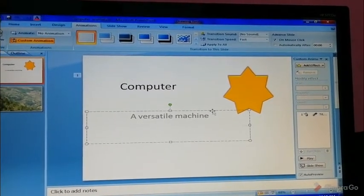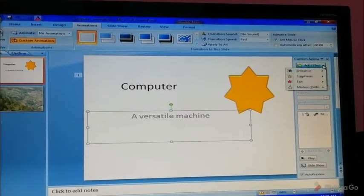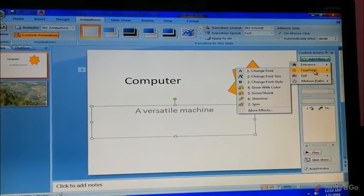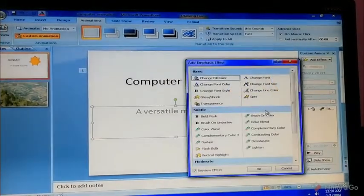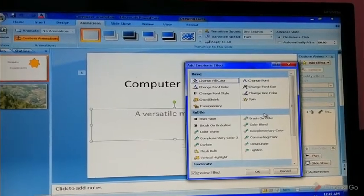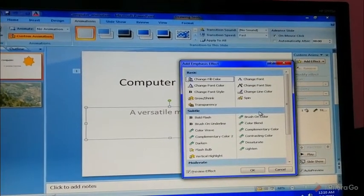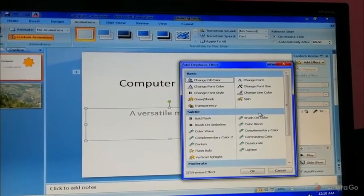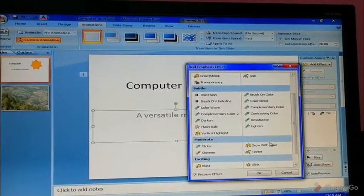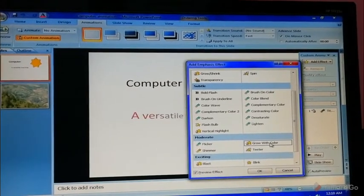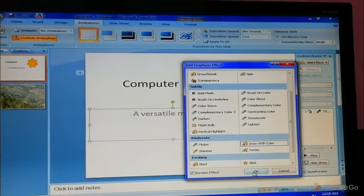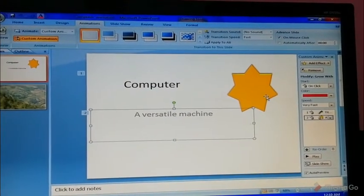Select the next object and click on the Add Effect button. Now see the Emphasis category. Here are so many effects you can select, like this one, Grow with Color, to emphasize an object. Click on the OK button.